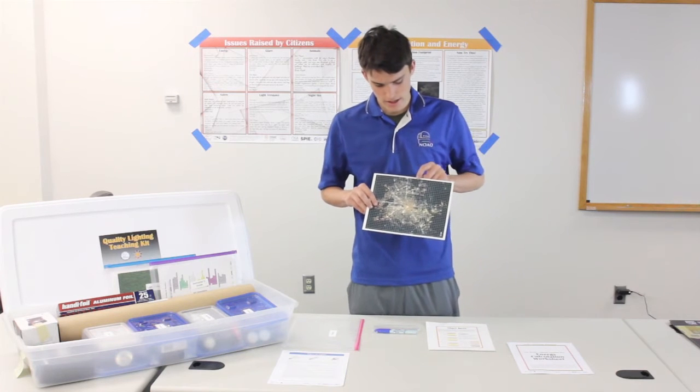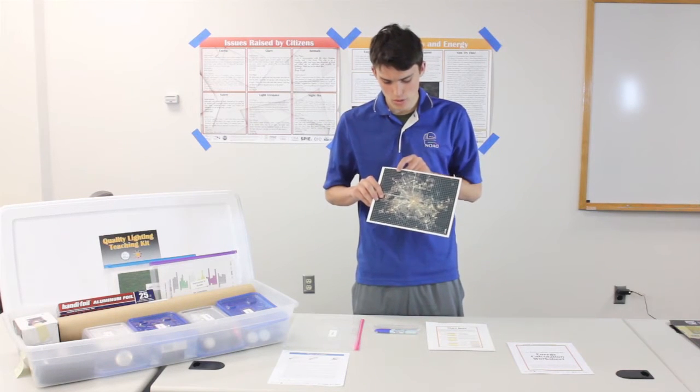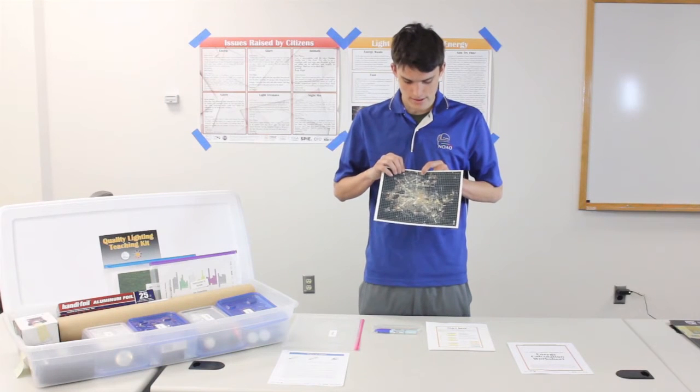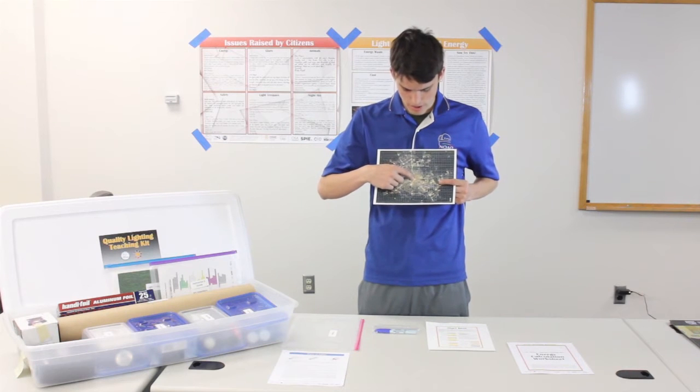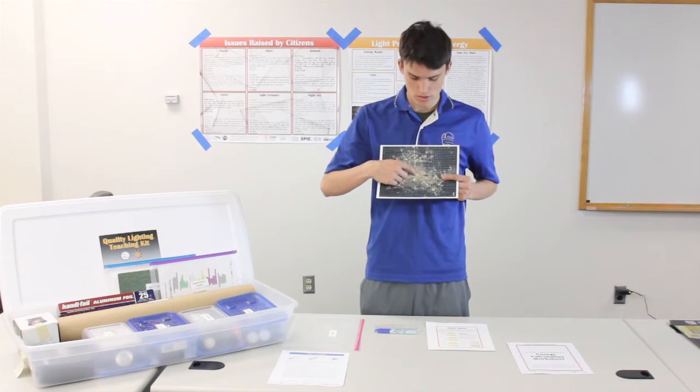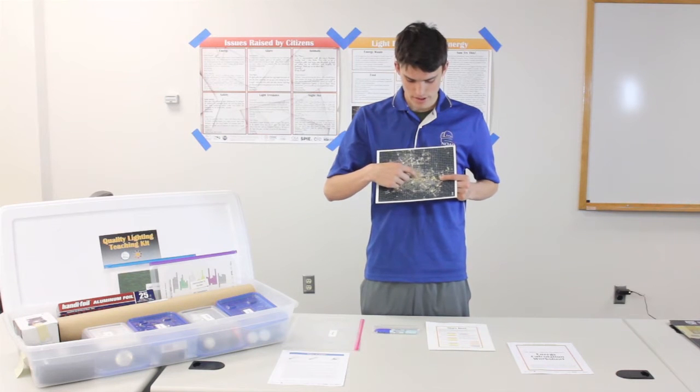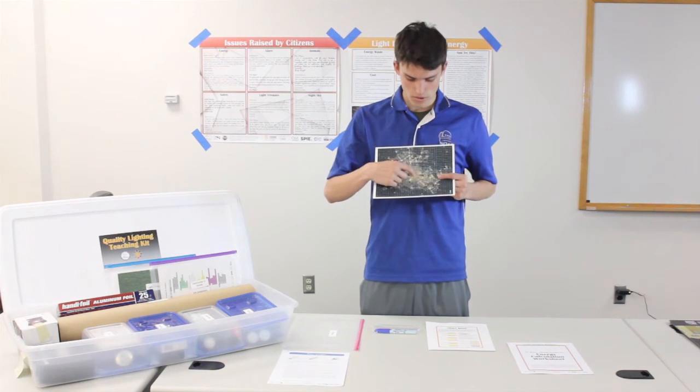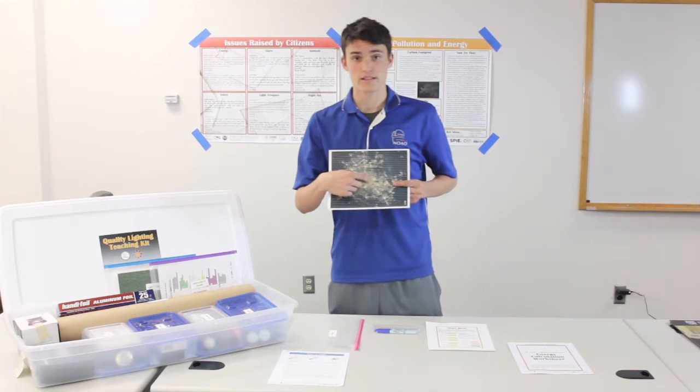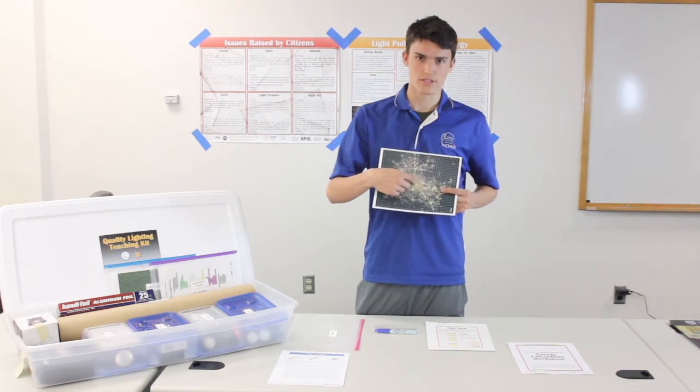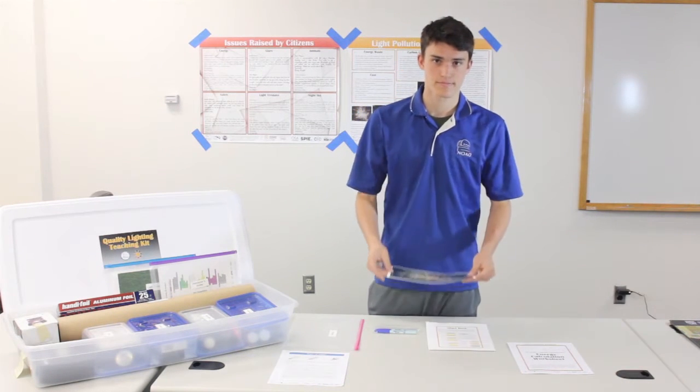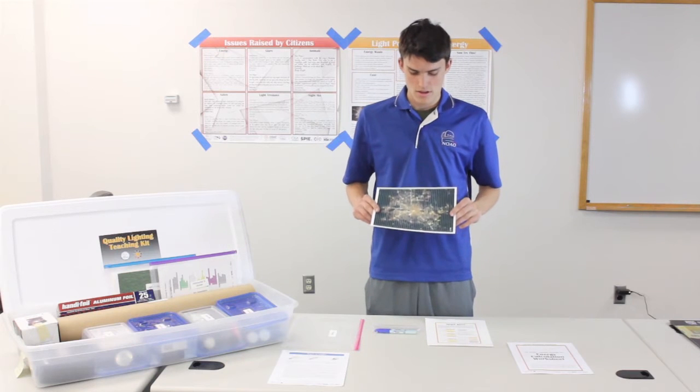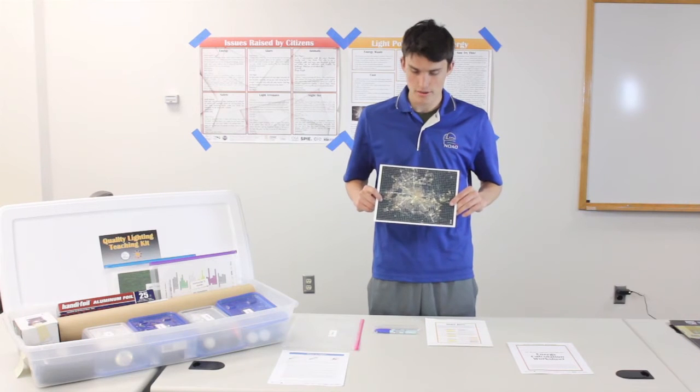To do this activity, have the students go through each row and count only the predominant color of lights. For example, in this one over here, the predominant color is white, so this would count as a white square. However, next to it is predominantly brown, so that would be counted as a brown square. Do not have the students double count squares, as this will throw off calculations.